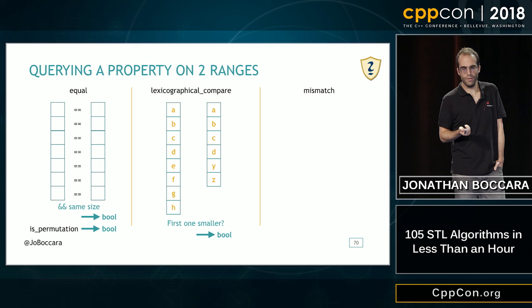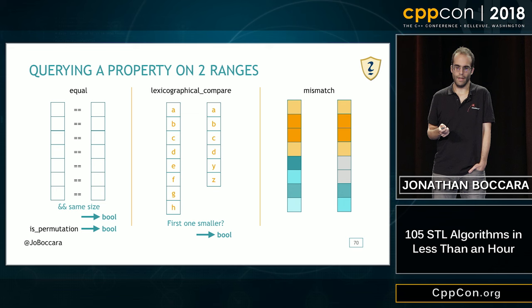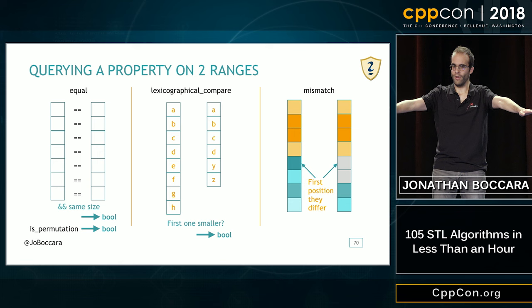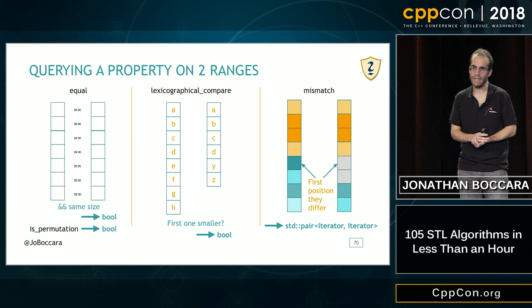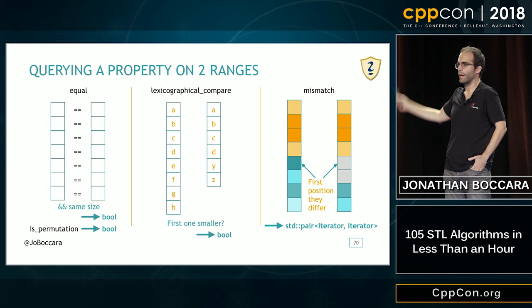The last way to compare two collections is to traverse them both and stop whenever they start to differ. That's what std::mismatch does — it returns a pair of iterators pointing to the respective positions where they start to differ in the two collections.